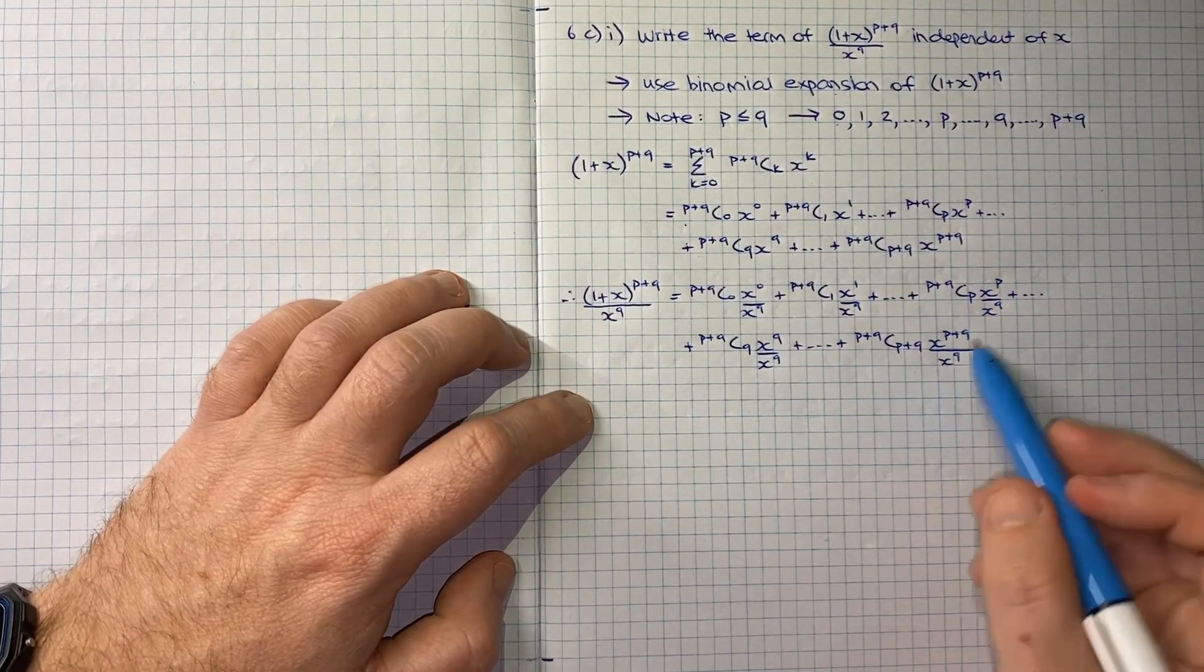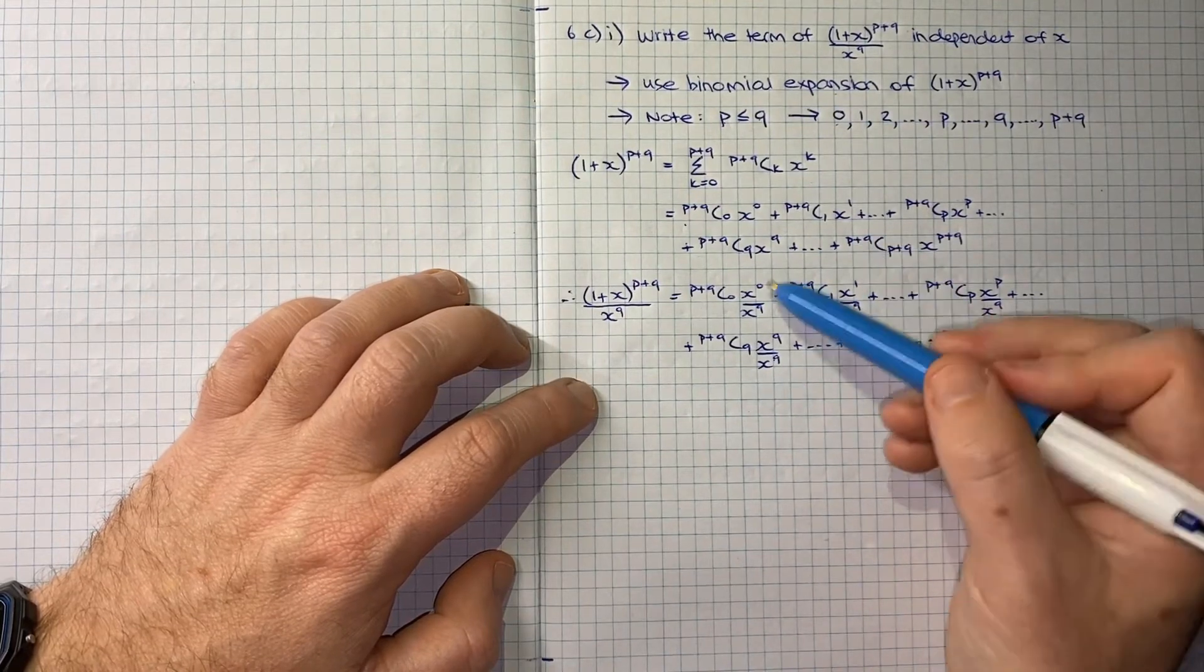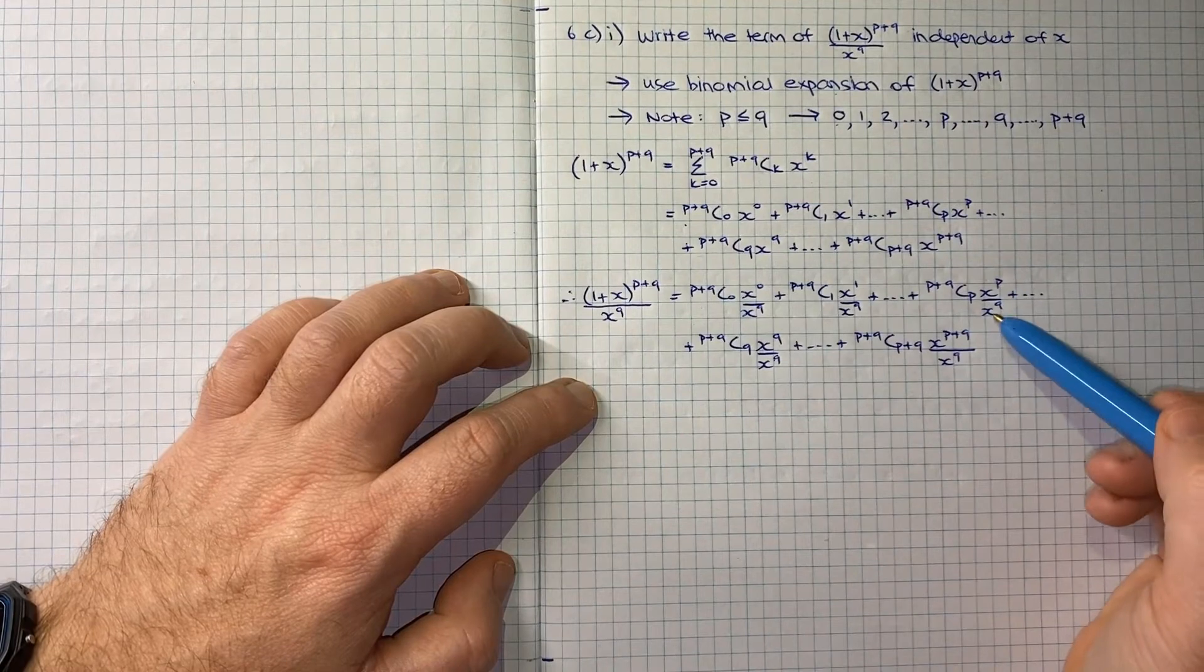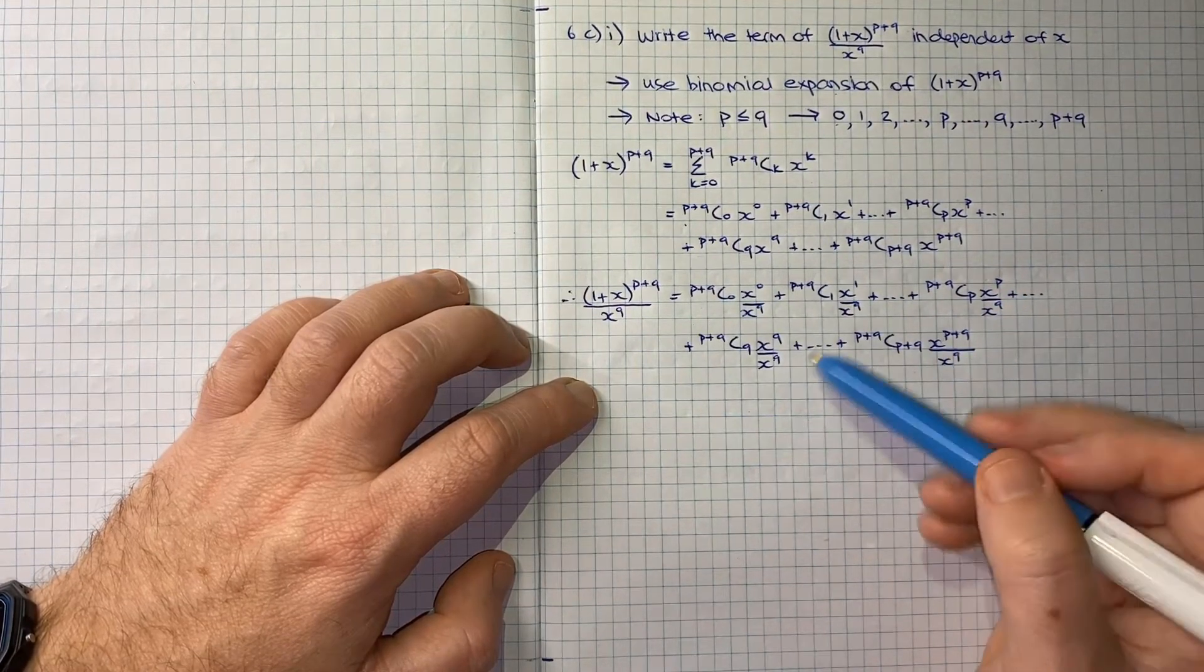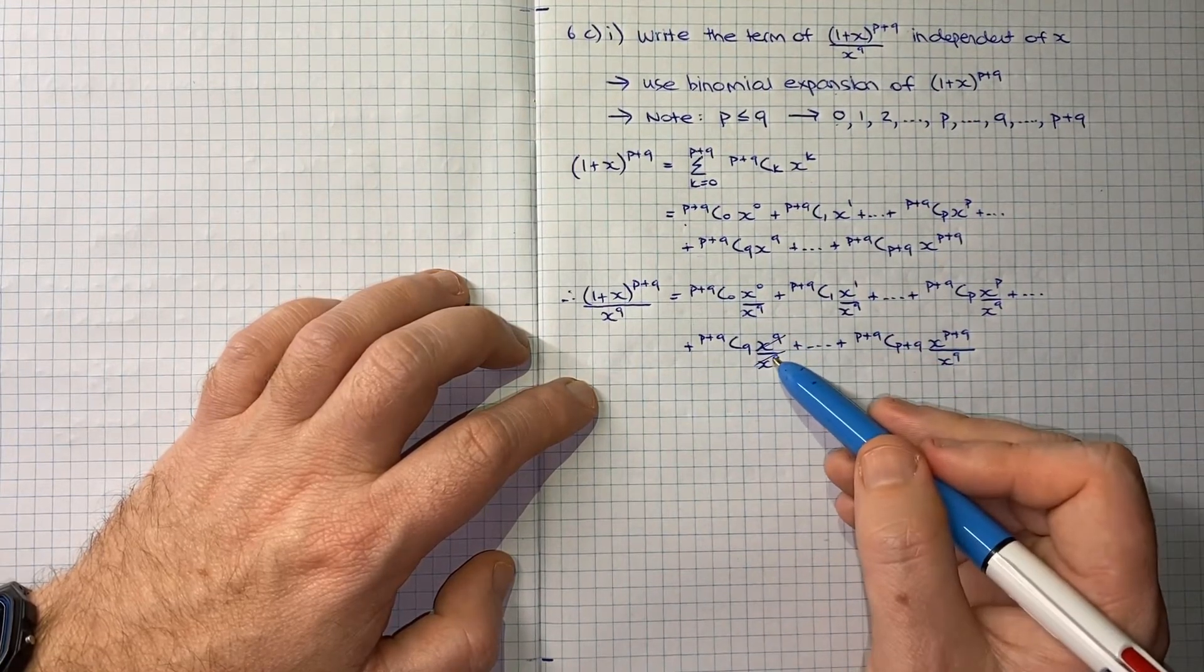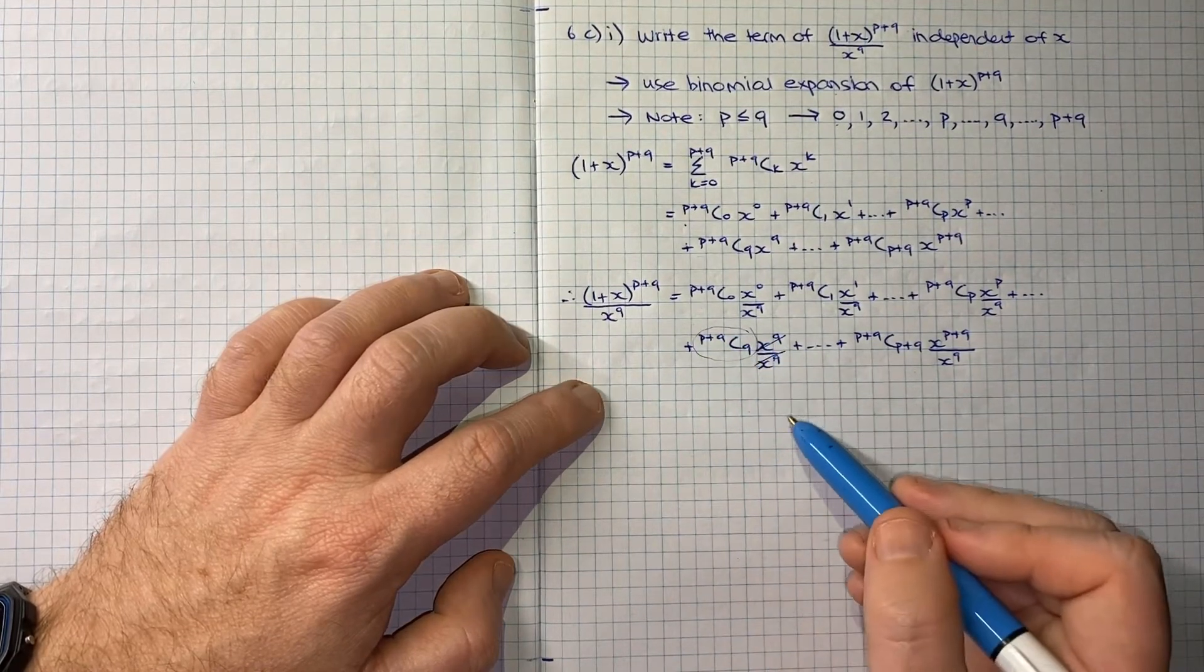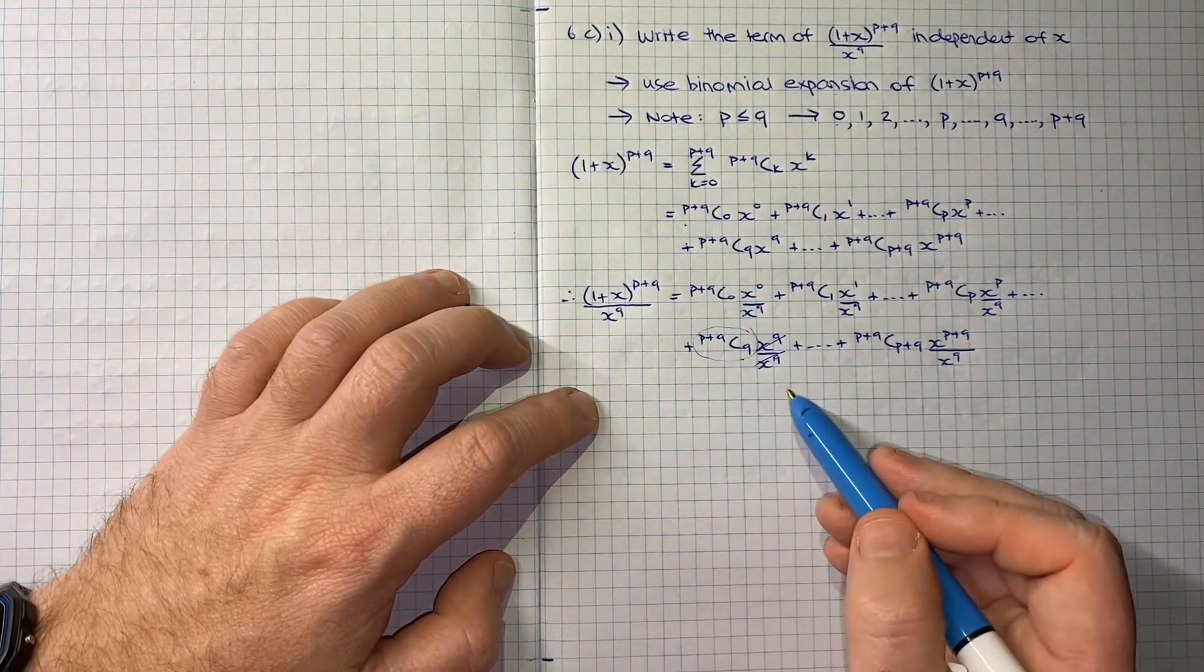Given we're focused on the term that's independent of x, what becomes important is that these numerators and denominators with x's in them will all still simplify to be x to the something, except for this term that's got both x^q on the top and the bottom. That perfectly cancels so that (p+q choose q) is just a constant all by itself with no x connected to it.